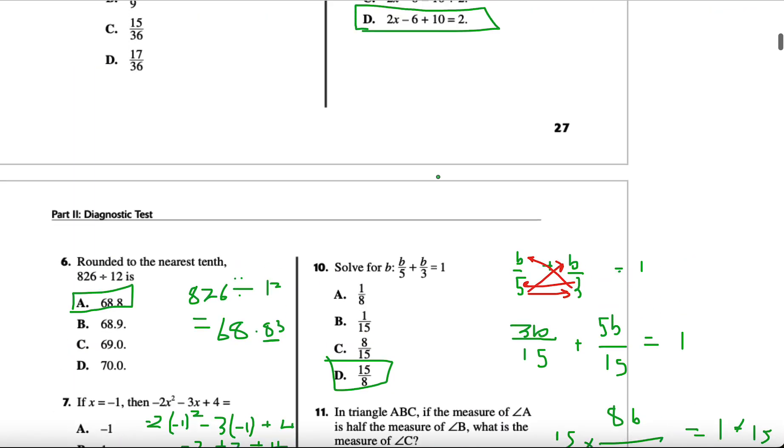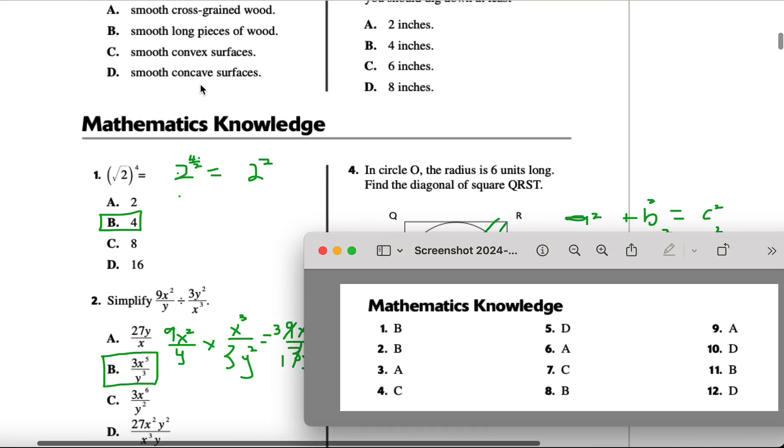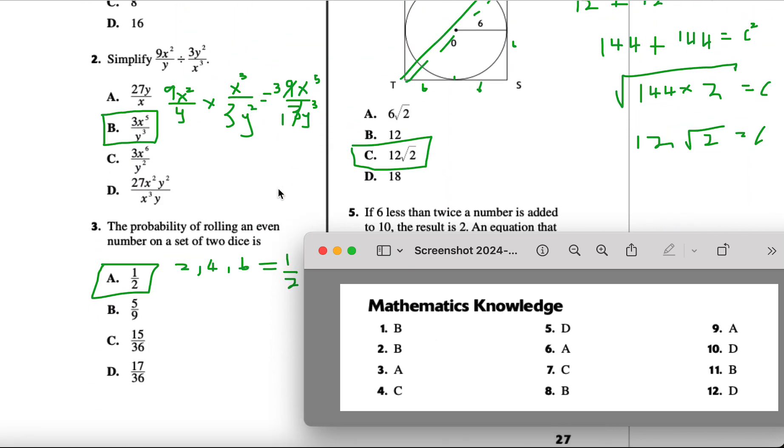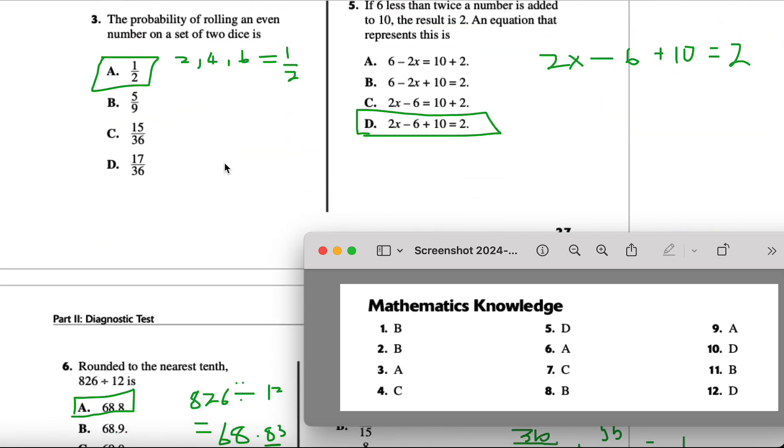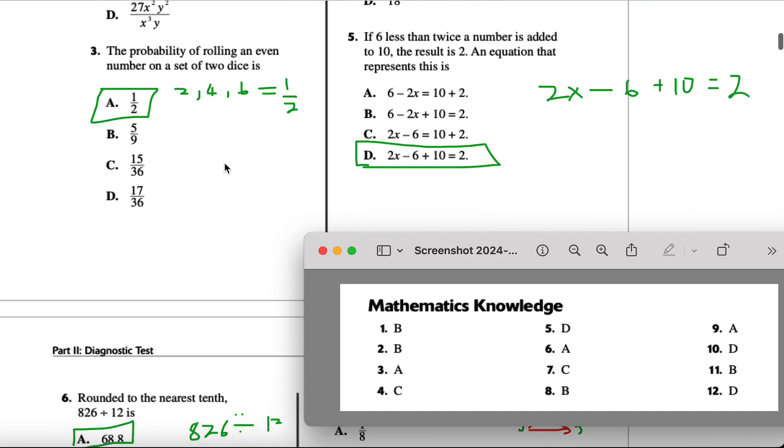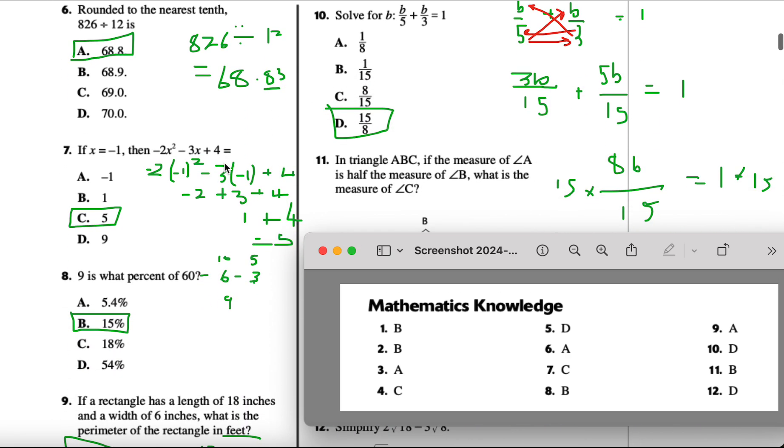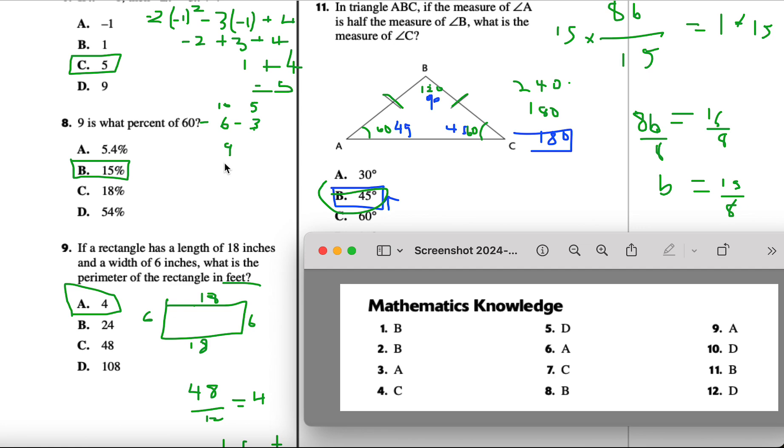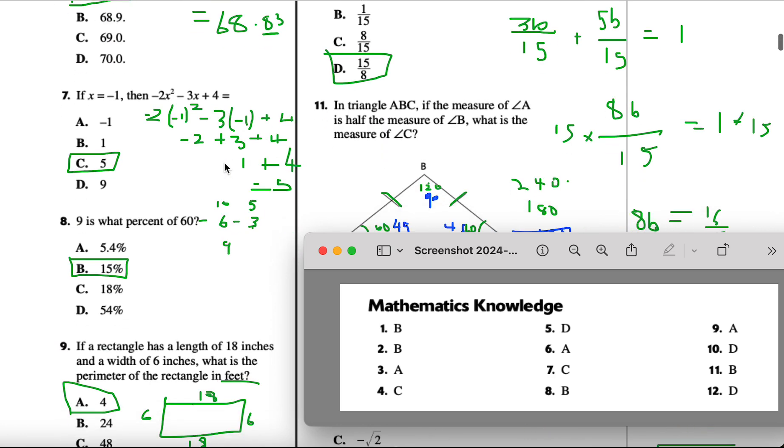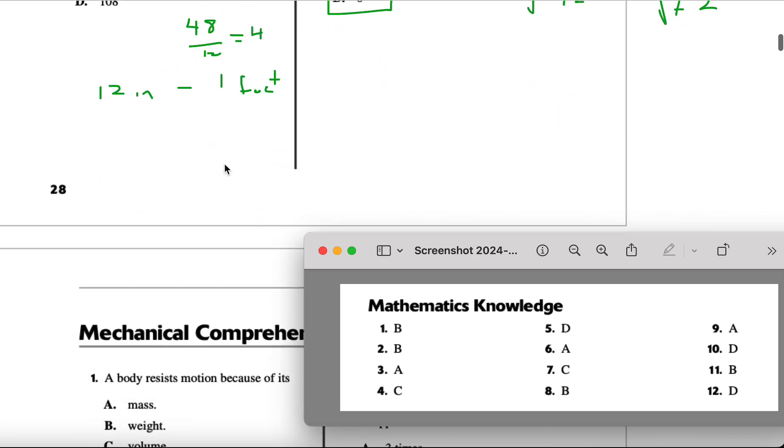Now we can check the answers to see how we did. Number 1 was B, which is what we got. Number 2 is B, that's what we got. Number 3 is A, number 4 is C, number 5 is D, number 6 is A, number 7 is C, number 8 is B, number 9 is A, number 10 is D, number 11 is B, and number 12 is D. It looks like we got everything correct.